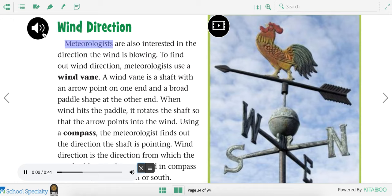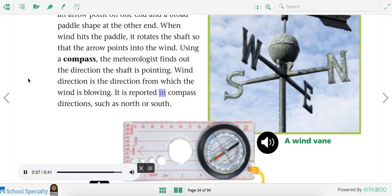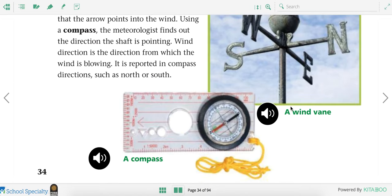Wind direction. Meteorologists are also interested in the direction the wind is blowing. To find out wind direction, meteorologists use a wind vane. A wind vane is a shaft with an arrow point on one end and a broad paddle shape at the other end. When wind hits the paddle, it rotates the shaft so that the arrow points into the wind. Using a compass, the meteorologist finds out the direction the shaft is pointing. Wind direction is the direction from which the wind is blowing. It is reported in compass directions, such as north or south. So this wind vane tells people the direction of the wind, and you can also use a compass.